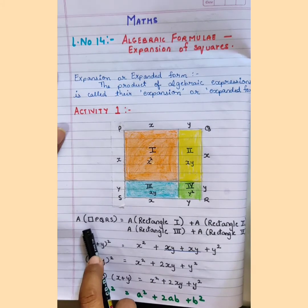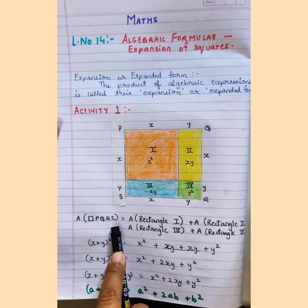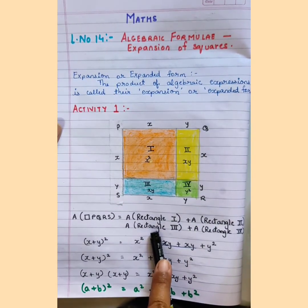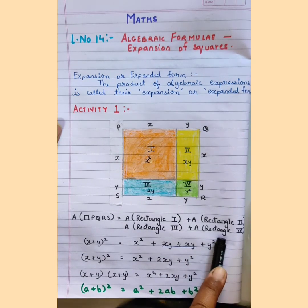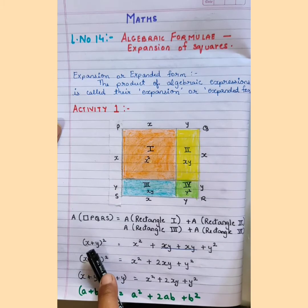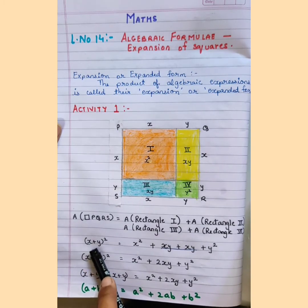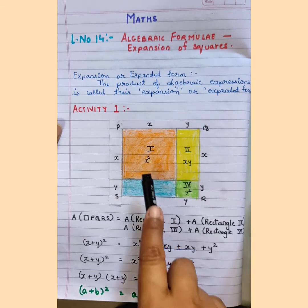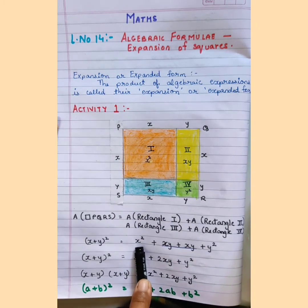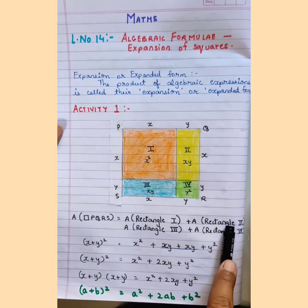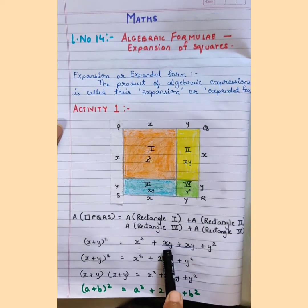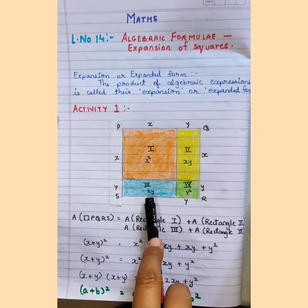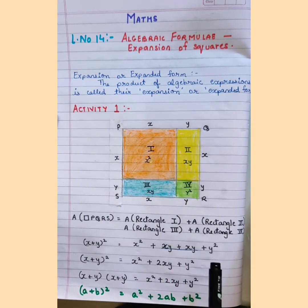The area of quadrilateral PQRS equals area of Rectangle 1 plus area of Rectangle 2 plus area of Rectangle 3 plus area of Rectangle 4. The area of quadrilateral PQRS is (X + Y) whole square. Area of Rectangle 1 is X square, Rectangle 2 is XY, Rectangle 3 is again XY, and Rectangle 4 is Y square.